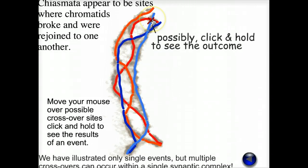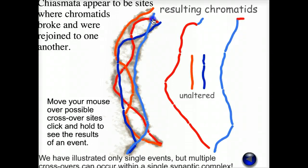We can move the mouse over and see what the outcomes are. This is a crossing over point between two chromosomes. You can see the parts that have been exchanged between them.